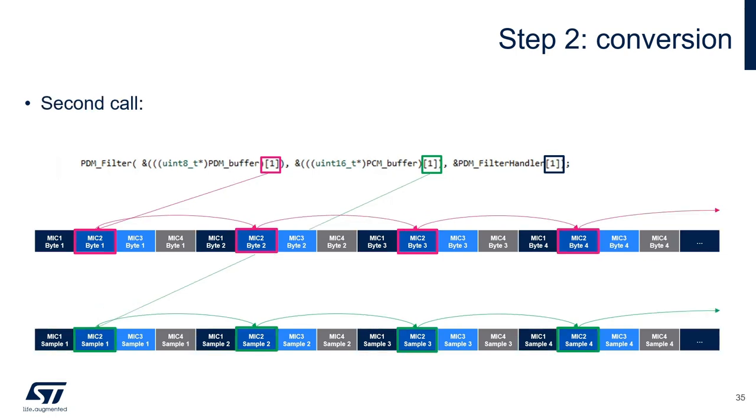The second call works in the same way. But this time, we pass pointers to the second byte of the PDM buffer and the second half word of the PCM buffer. Also, we point to the proper handle, the one for the second microphone. Bytes are read and samples are written as in the figure.